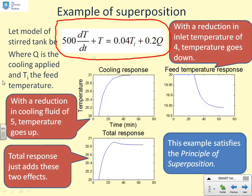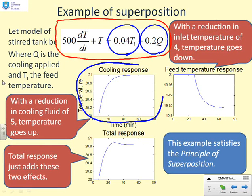What I want to do is separate the response dependence on the feed temperature and the response dependence on the cooling. I can analyze them both separately because that can have advantages. This first graph down here looks at the response when I change Q.